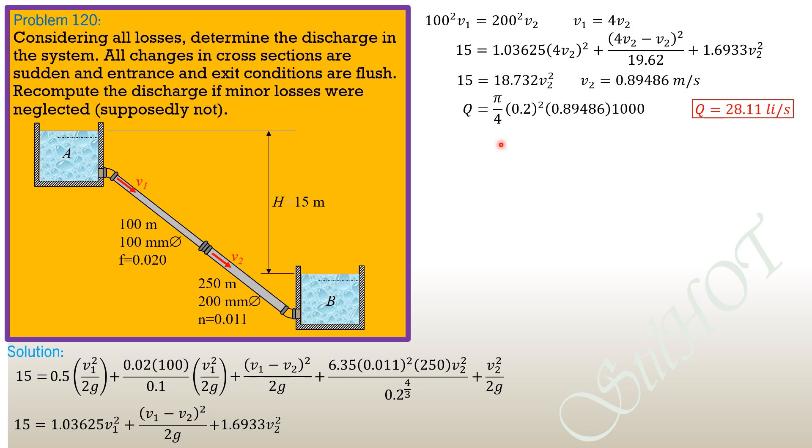Then for the second part, we ignore minor losses. So we consider only major losses and these are the major losses, second and the second to the last terms. So 15 equals 0.02 times 100 over 0.1 velocity head 1 plus 6.35 times 0.011 square times 250 V2 square over 0.2 to the 4 thirds.